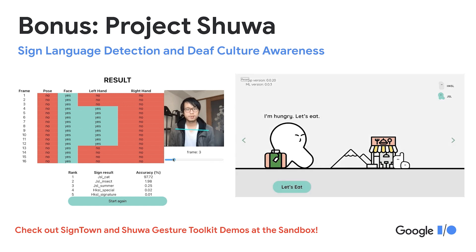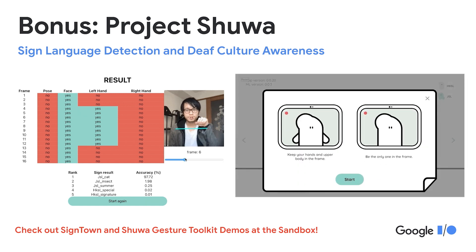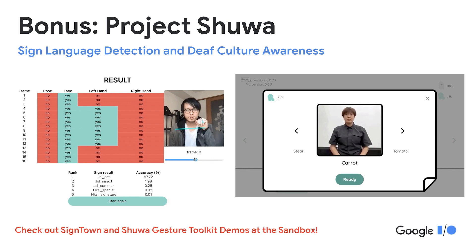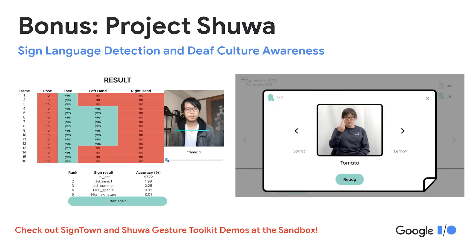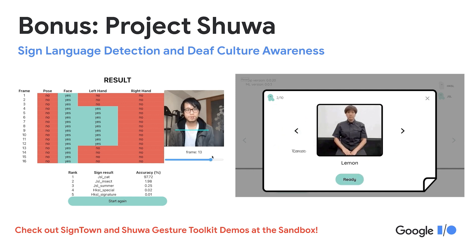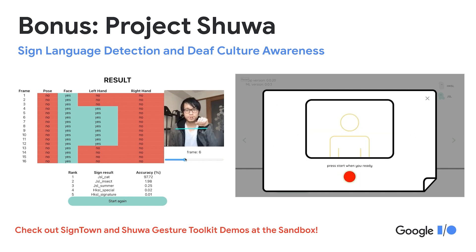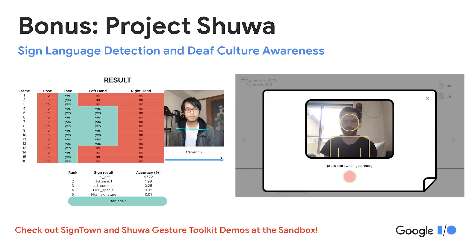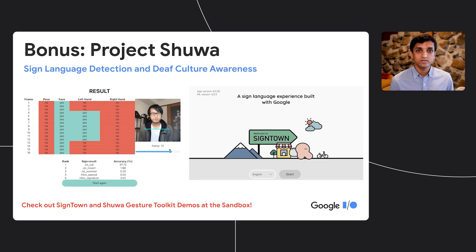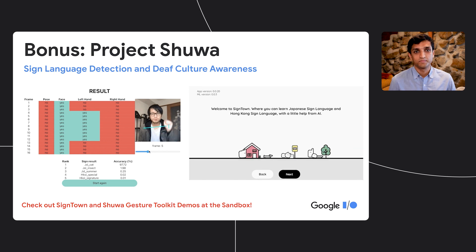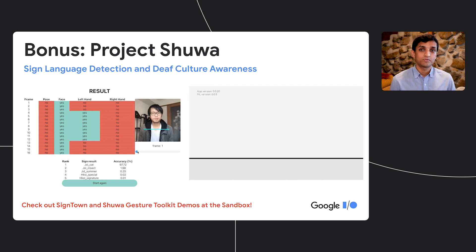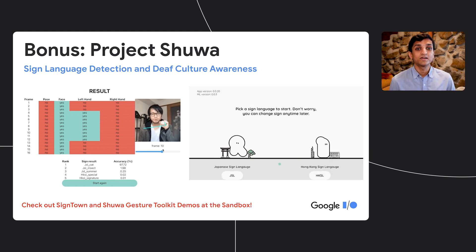Together with the Nippon Foundation and the Chinese University of Hong Kong, we created a web game for people to learn Japanese and Hong Kong sign languages. And since there are over 150 different sign languages in the world, including American Sign Language and Indian Sign Language, we have open sourced a gesture detection toolkit for developers. You can check out demos of Project SHUWA at the IO Sandbox.